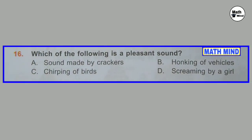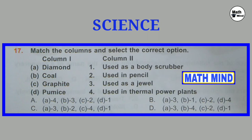Question number 16: Which of the following is a pleasant sound? Correct option is C: Chirping of birds. Sound made by a cracker, honking of vehicles, and screaming of a car are all noise. Question number 17: Match the columns and select the correct option. Correct option is D: Diamond used as a jewel, coal used in thermal power plants, graphite used in pencil, and pumice stone used as a body scrubber.